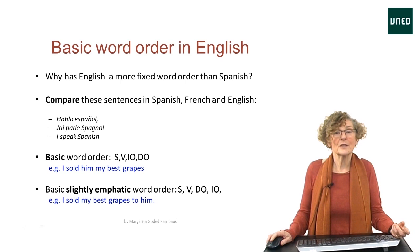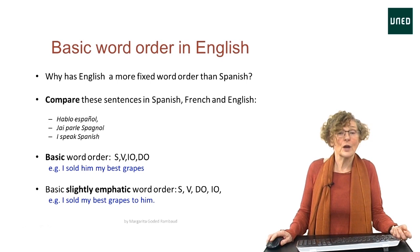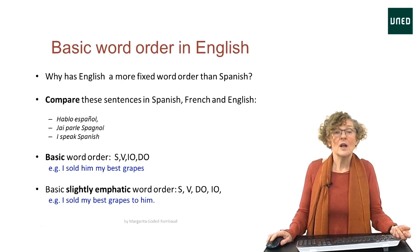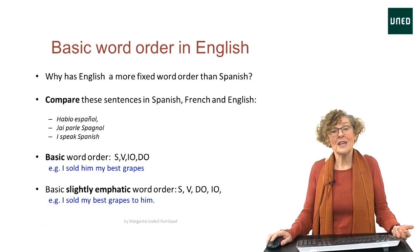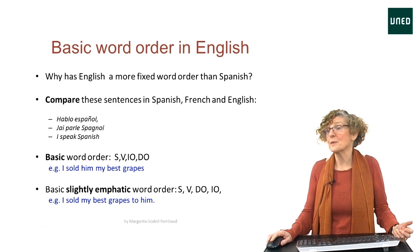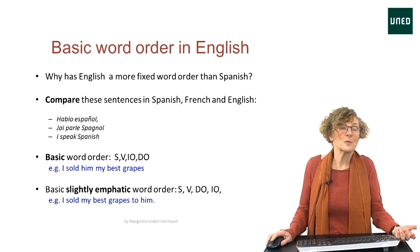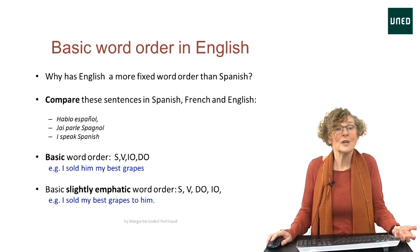The basic word order of different parts of speech in English is S V IO DO. If we change that to S V DO IO, the result is that we emphasise the indirect object — for example, 'to him' rather than 'to my cousin'. So there is a big difference between 'I sold him my best grapes', which is non-emphatic, and 'I sold my best grapes to him', which is slightly emphatic.